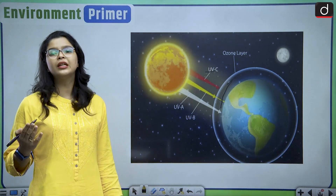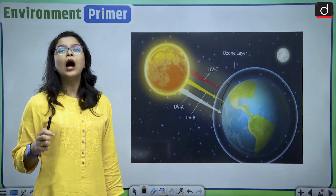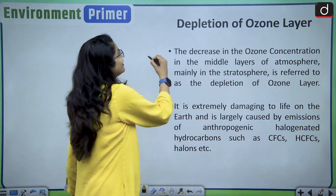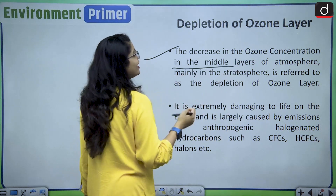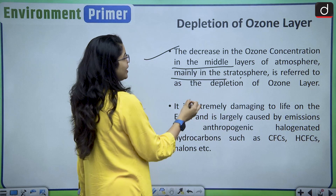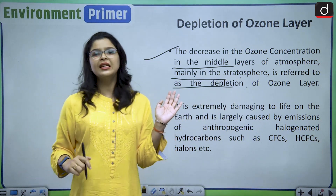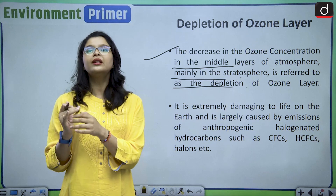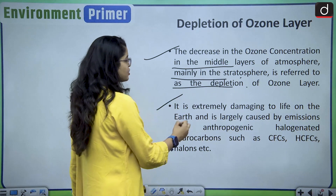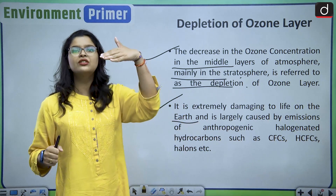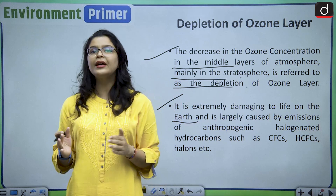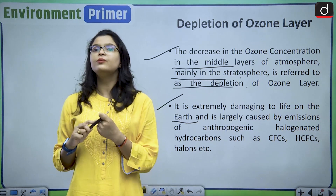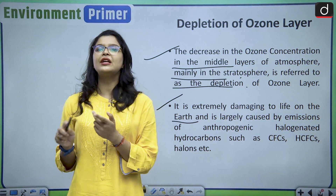Now let us analyze the phenomenon of depletion of the ozone layer and how it is harmful for humans. The decrease in ozone concentration in the middle layers of the atmosphere, mainly in the stratosphere, is referred to as the depletion of the ozone layer. It is extremely damaging to life on earth because harmful ultraviolet rays, which are normally absorbed by the ozone layer, will directly enter the earth if the ozone layer depletes, causing harmful impacts on both human and plant life.